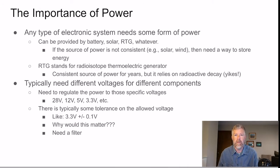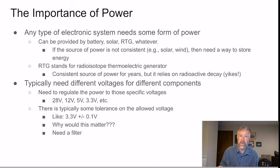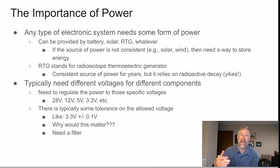We're going to start by talking about the importance of power and why you need it in a system. Any electronic system needs some form of power, which can be provided by a battery, solar power, wind power, an RTG, or whatever form you want. If the source of power is not consistent — for example solar or wind, where you lose power at night or when the wind dies down — then you need a way to store energy, such as a battery, to get through periods without readily available power.